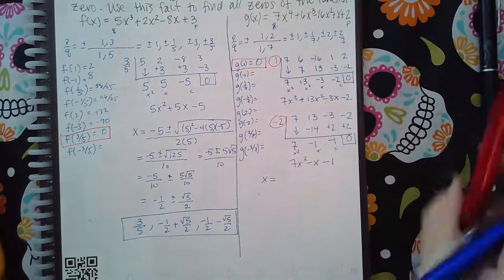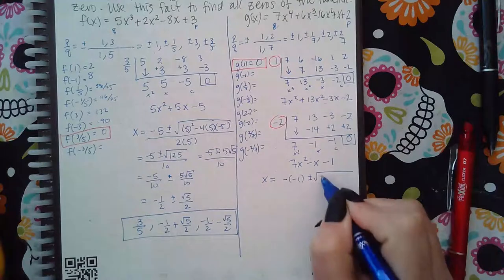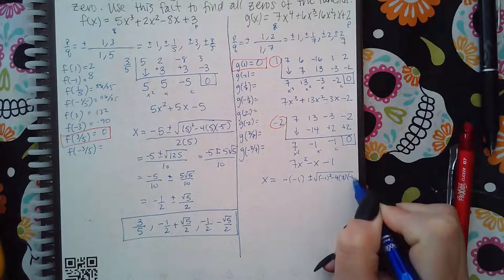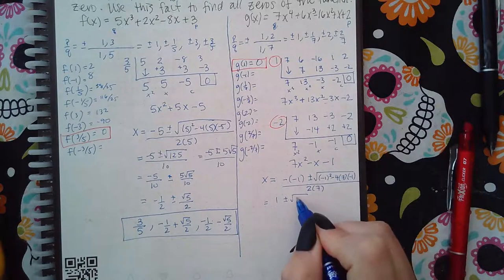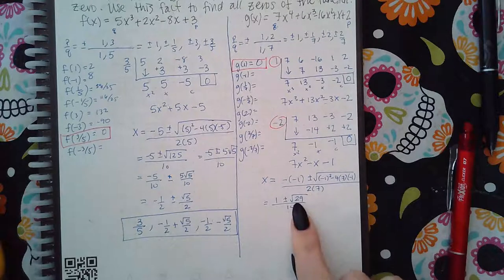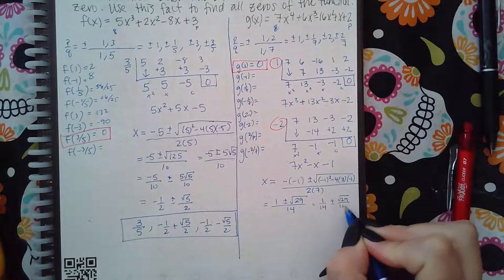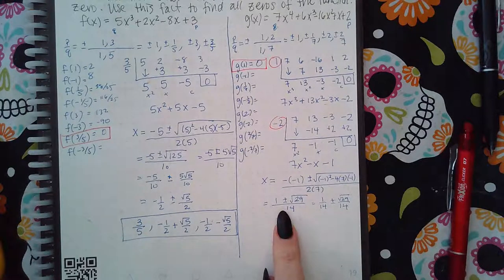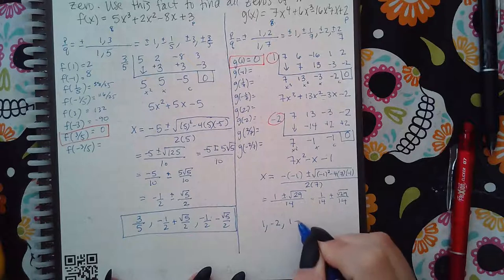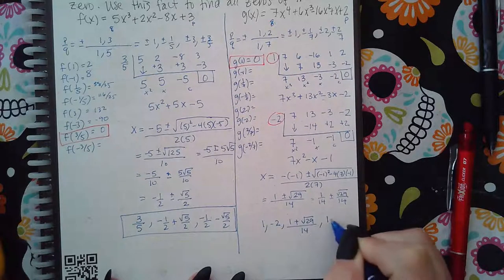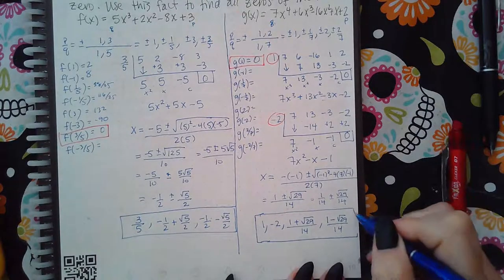So far we have two zeros, and we'll get the last two from the quadratic formula: negative b plus or minus the square root of b² minus 4ac, all over 2a. That gives 1 plus or minus the square root of 29, all over 14. This will not simplify, and if separated it does not reduce either. You can leave it in fraction form or separated form — it's up to you. The four zeros are: 1, negative 2, (1 + √29)/14, and (1 - √29)/14.